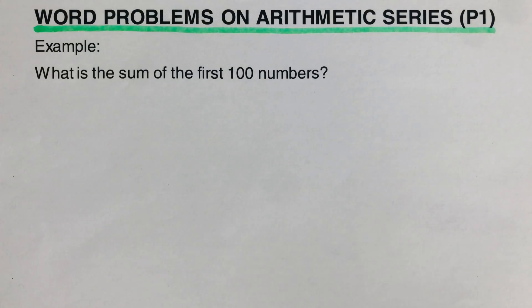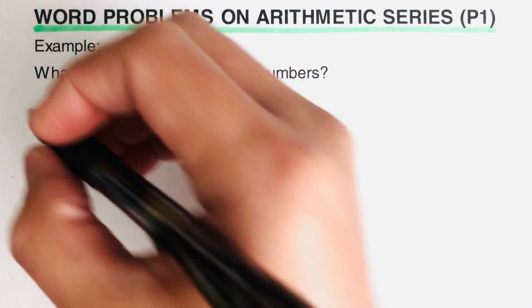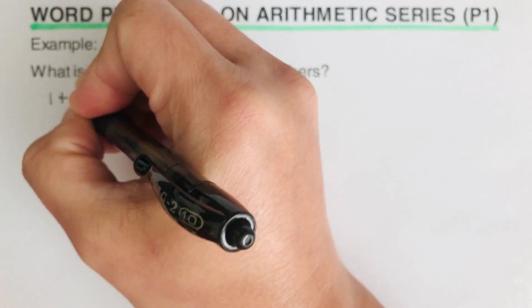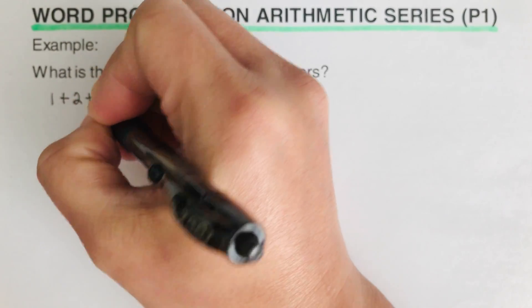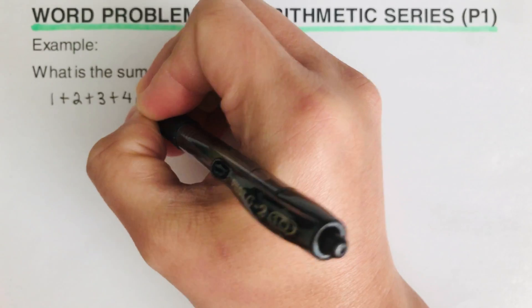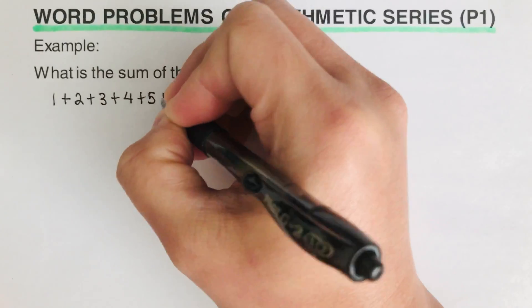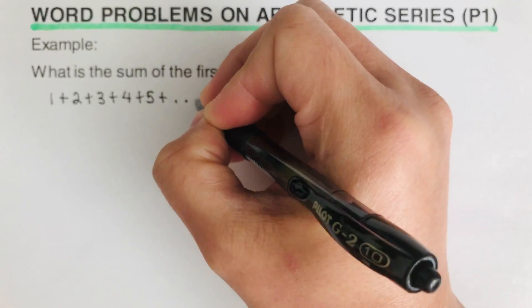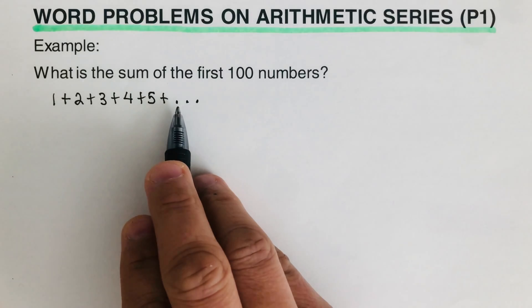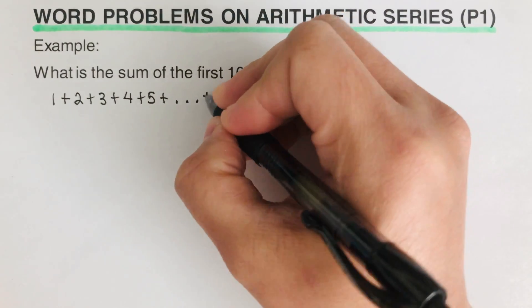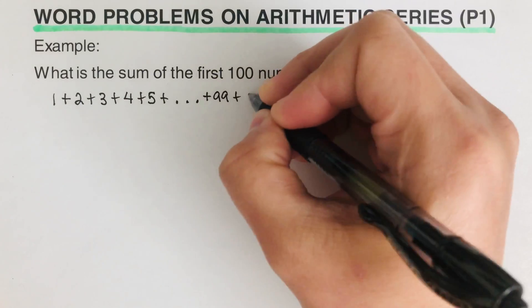So we can write it out. That's gonna be 1 plus 2 plus 3 plus 4 plus 5, and then we just write three dots here. The three dots tell us that there are still numbers after that, then we can say plus 99 plus 100.